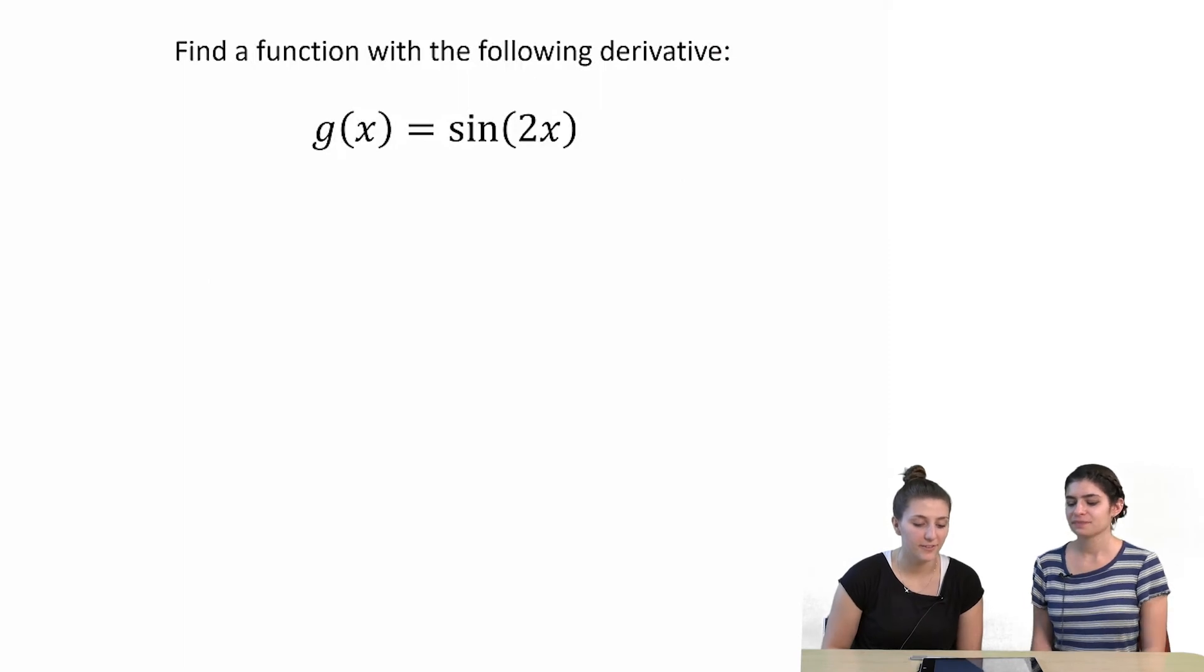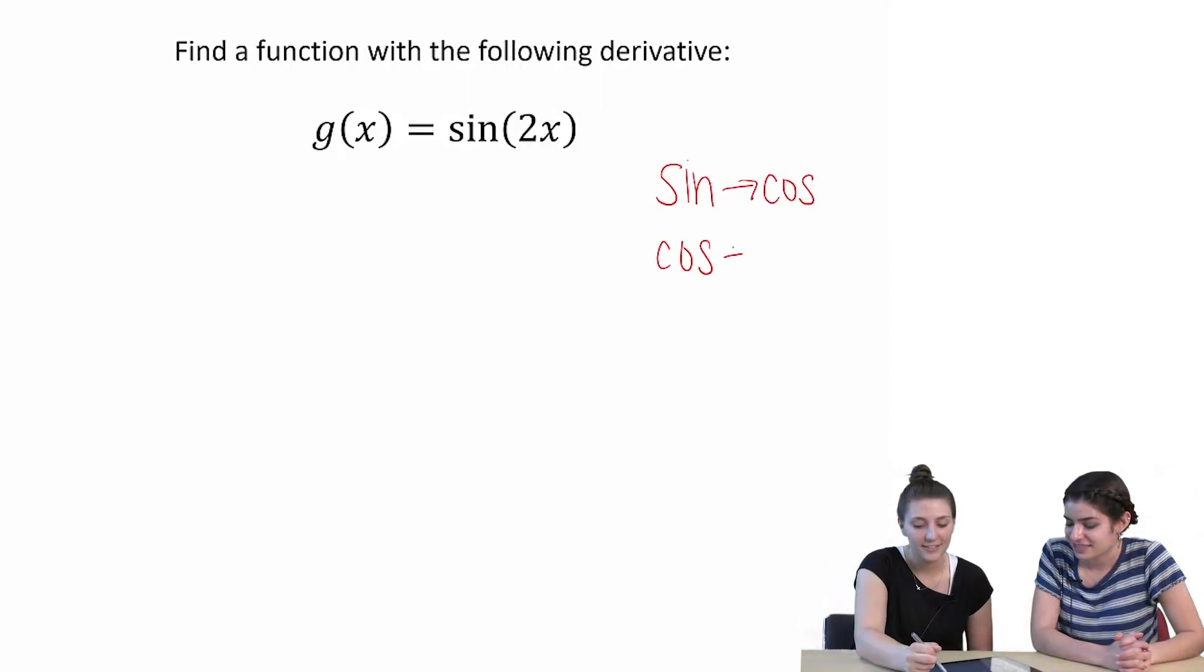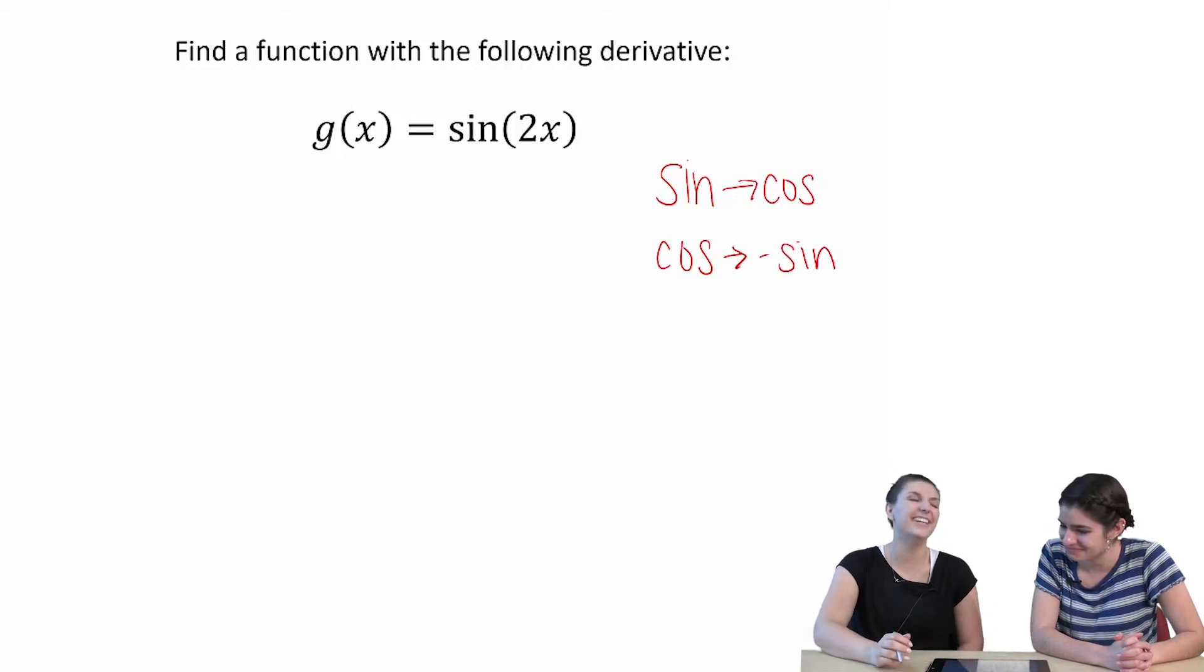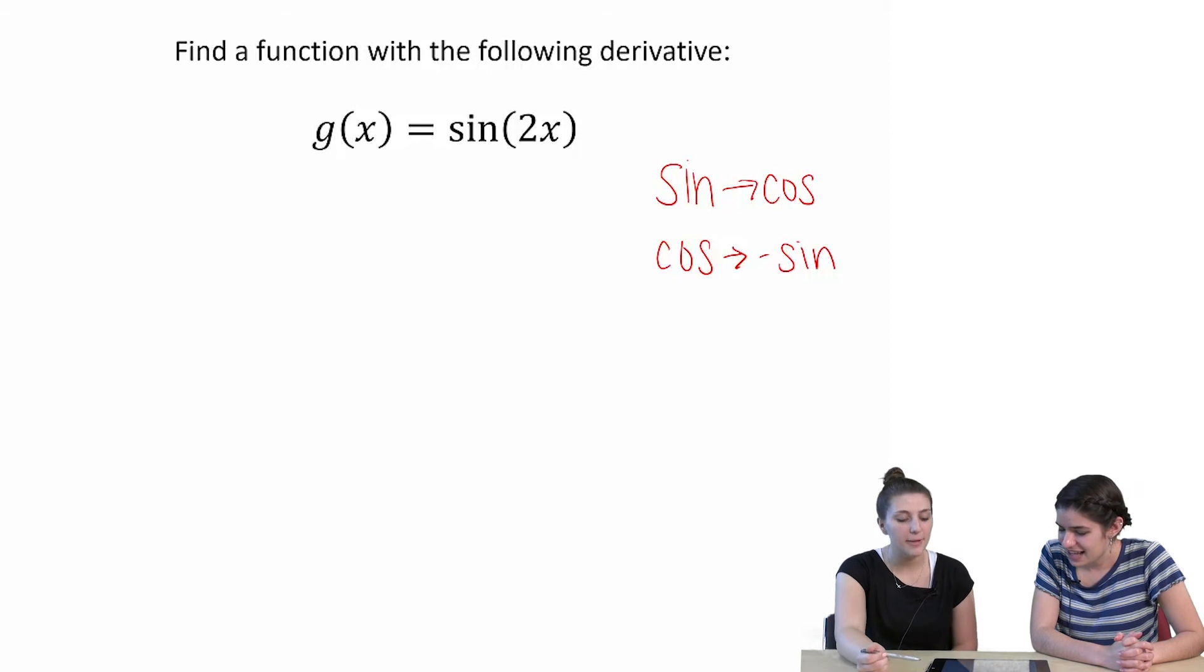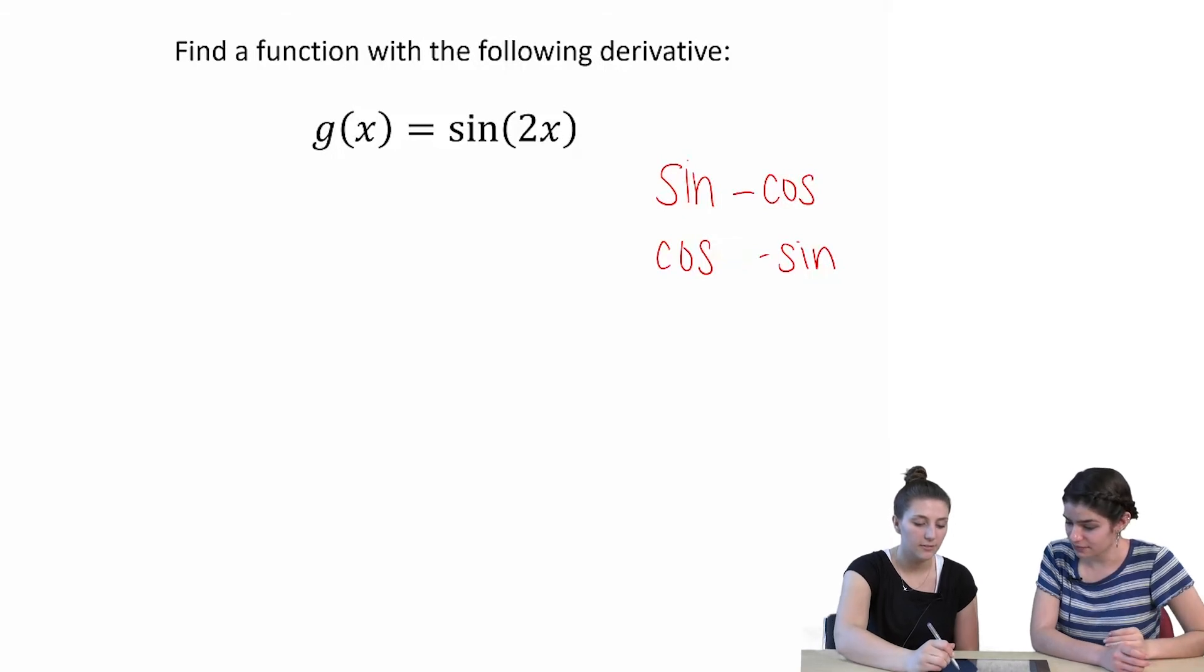So this derivative should have come from 1 half x to the 4th plus 4 over x plus pi x. Yeah. Do we? Now we have to find a function with the following derivative of. Oh dear god. Cosine. Cosine. It's a negative sign. Ah. Rings a bell. So sine doesn't make it too right.